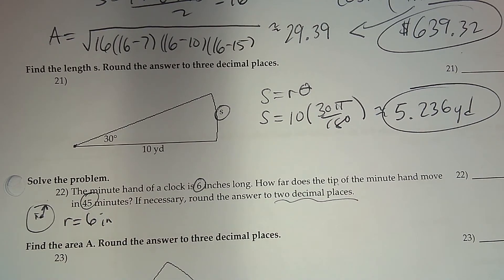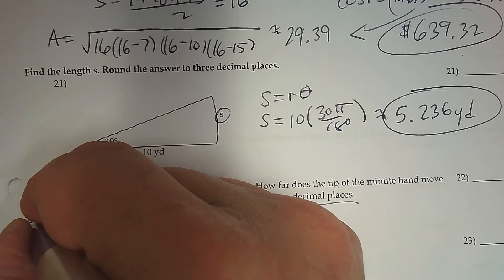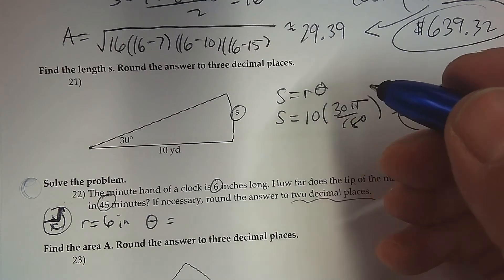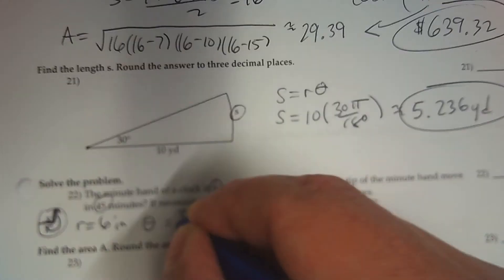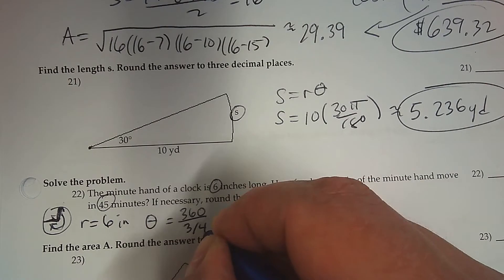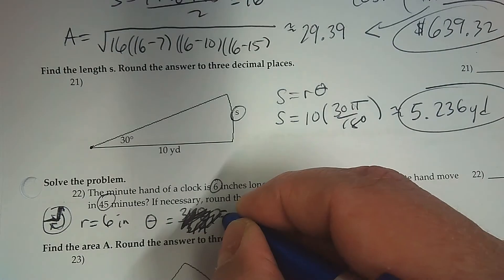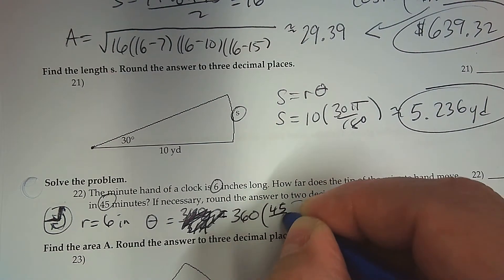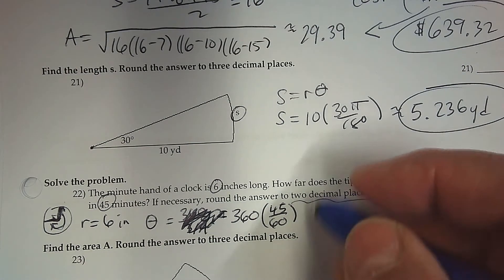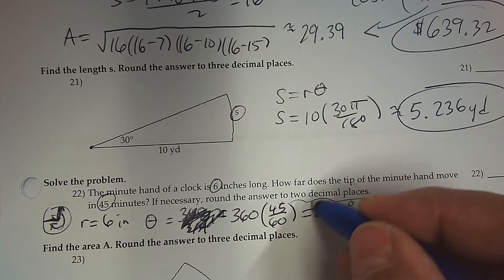The tricky part is figuring out what angle 45 minutes represents. A whole circle is 360 degrees, and 45 minutes is 3 quarters of that. So 360 times 3 quarters, or equivalently 360 times 45 over 60, gives you exactly 270 degrees. That's the angle the minute hand sweeps through in 45 minutes.